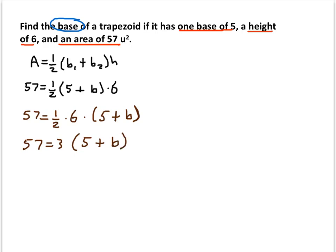Then let's distribute the 3. 3 times 5 and 3 times b. So we get 57 is equal to 3 times 5 is 15 plus 3b.